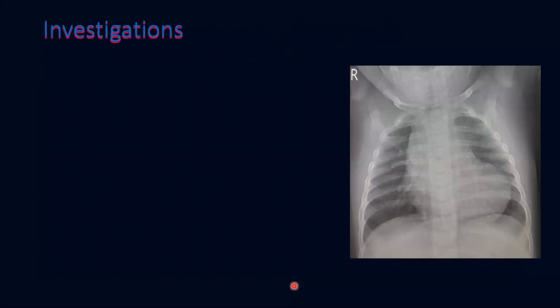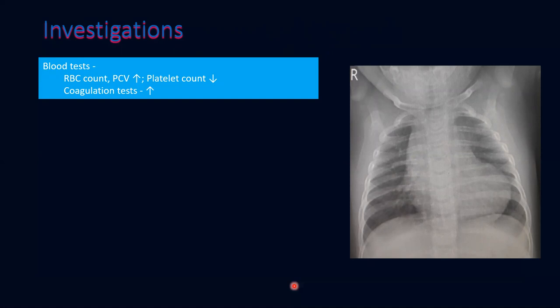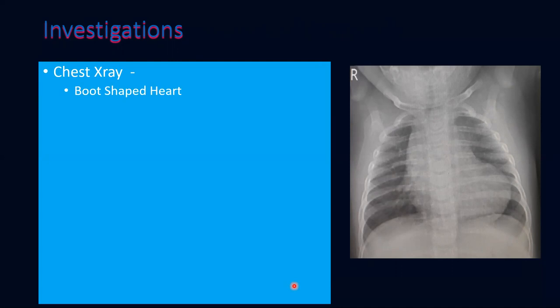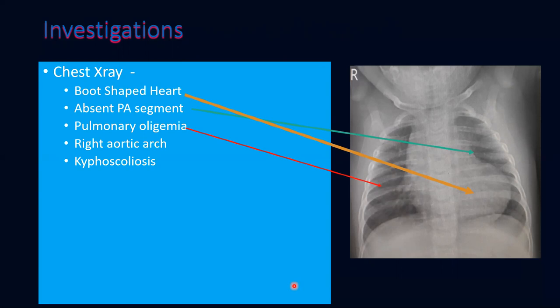For investigations: blood investigations reflect the extent of cyanosis — RBC count and PCV tend to be high, platelet count is decreased or dysfunctional, and coagulation tests tend to be deranged. The characteristic chest X-ray shows a boot-shaped heart formed by the hypertrophic RV tilting up the cardiac apex from the diaphragm, exaggerated by absence of a pulmonary artery segment at the hilum and pulmonary oligemia — these are the three characteristic features. Look also for a right aortic arch and kyphoscoliosis.